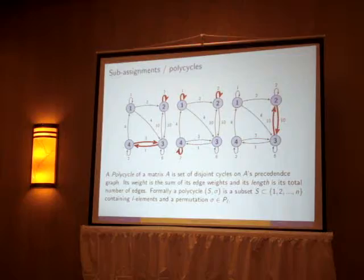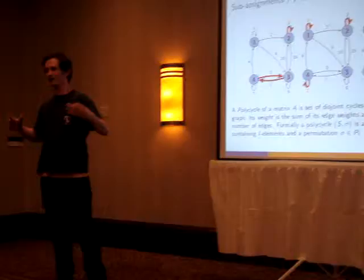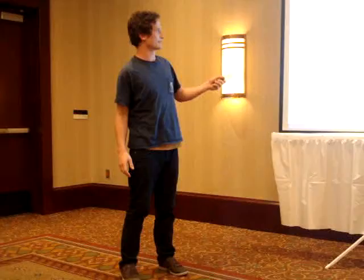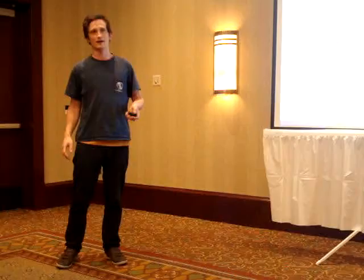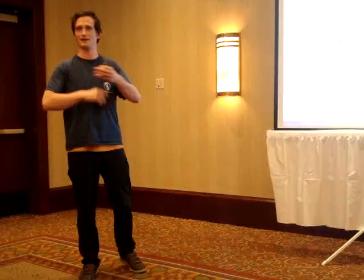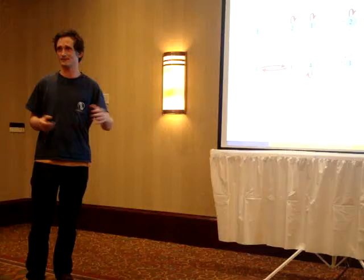So the next thing I want to define is a kind of sub-assignment, or what I'm going to call a poly-cycle. So the idea here is that rather than having an assignment on the whole graph, I'm just going to take a subset of the vertices and have an assignment there. So here's an assignment on these three vertices, here's an assignment on these three, here's an assignment on those two. And so, like before, a full assignment is a set of disjoint cycles which is tile on the whole vertex set. A sub-assignment or a poly-cycle is just any set of disjoint cycles. It doesn't necessarily cover the whole thing.